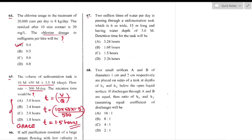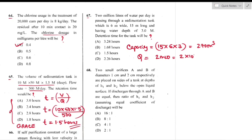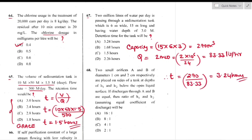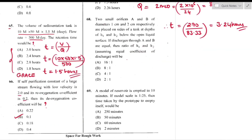Question number 67: 2 million liters/day passes through a sedimentation tank 15 m × 6 m × 3 m deep. Capacity = 270 m³. Discharge = 2 × 10⁶ L/day = 83.33 m³/hr. Detention time T = 270 / 83.33 — option A is the right answer.